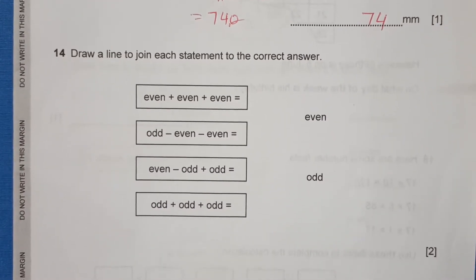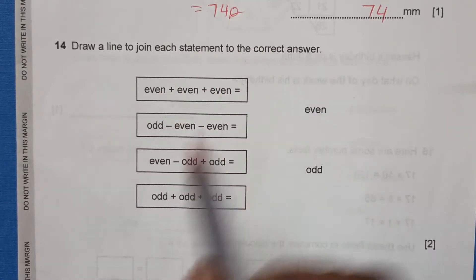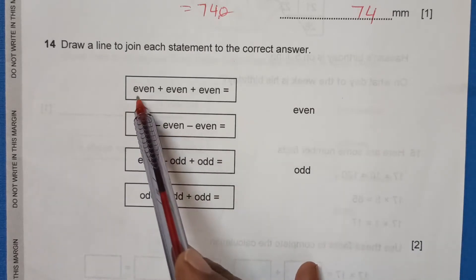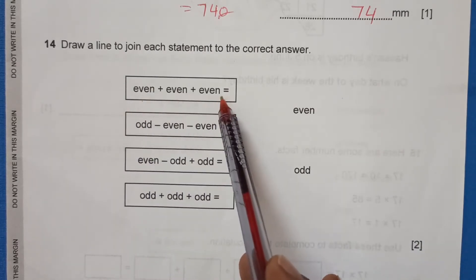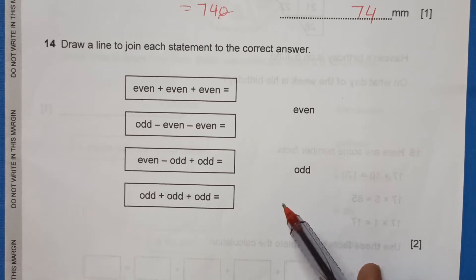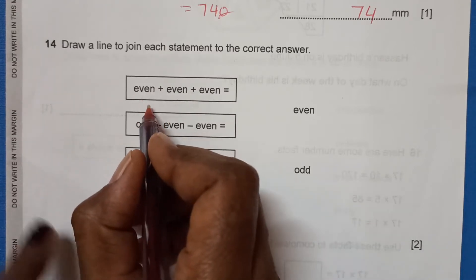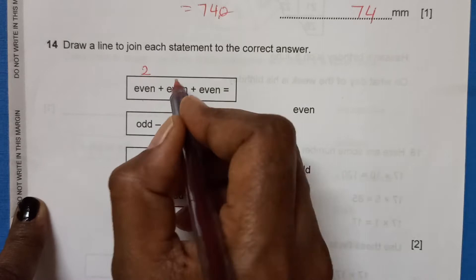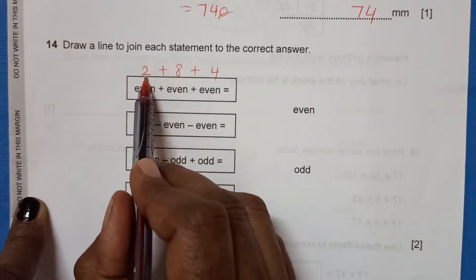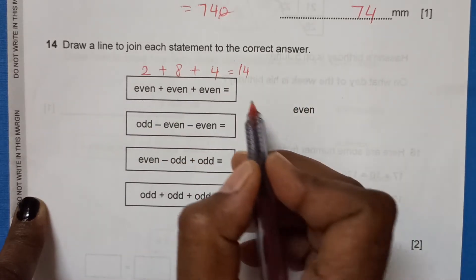Question 14: draw a line to join each statement to the correct answer — even or odd. The first statement is even plus even plus even. The easiest way is to take simple examples: let's take 2 plus 8 plus 4. That gives 10 plus 4 equals 14, which is an even number. So the answer is even.